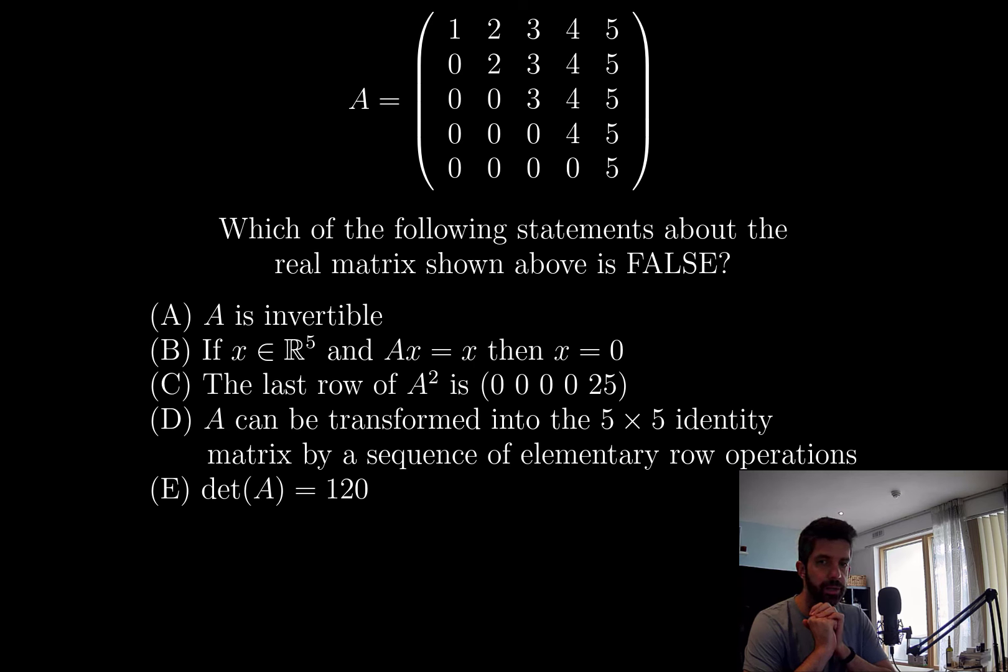The last row of A² is (0 0 0 0 25). Well, we can just work that out. If I just try and do that multiplication in my head for the last row. No, that's a true statement. The last row of A² is going to be (0 0 0 0 25).